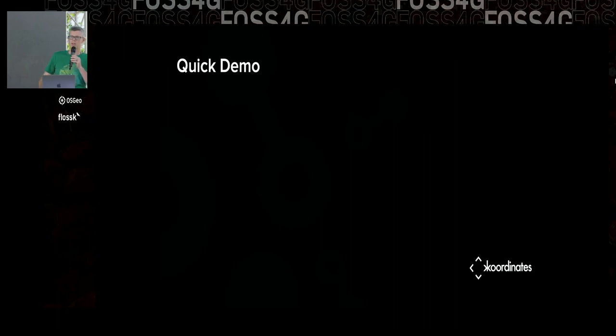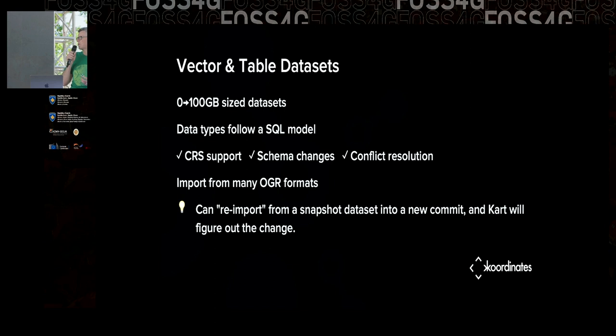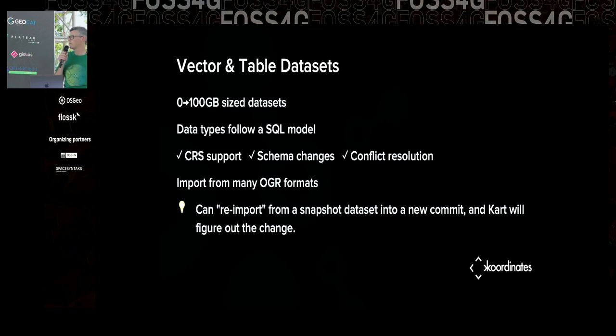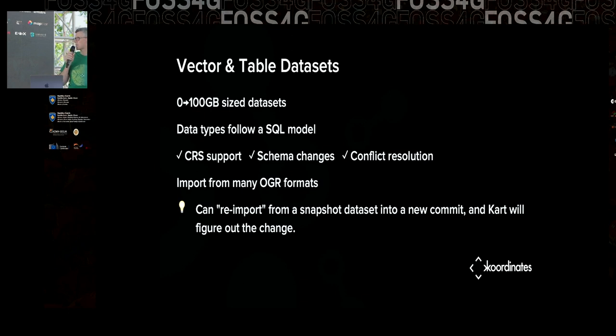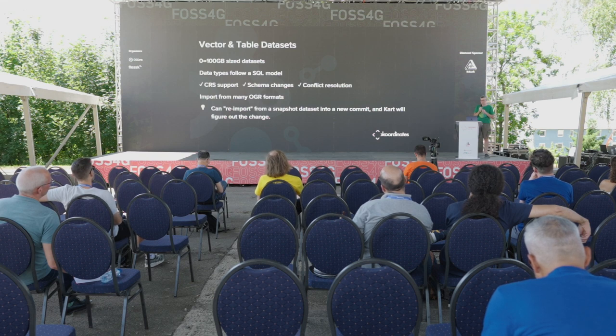We try to build on top of existing file formats. In this case we're working with a geopackage and some TIFF files. For vector and table datasets we support zero to 100 gigabytes, which is pretty big. We try to follow a SQL model — we have a schema, you can change your schema over time, and you have to assign data types and columns. We input from many OGR formats, we know about coordinate systems, and one of the cool things we can do is re-import from a snapshot. So if somebody sends you files every few weeks or months, you can keep loading into the same repository and build up a history of versions you can compare to see what's changed.